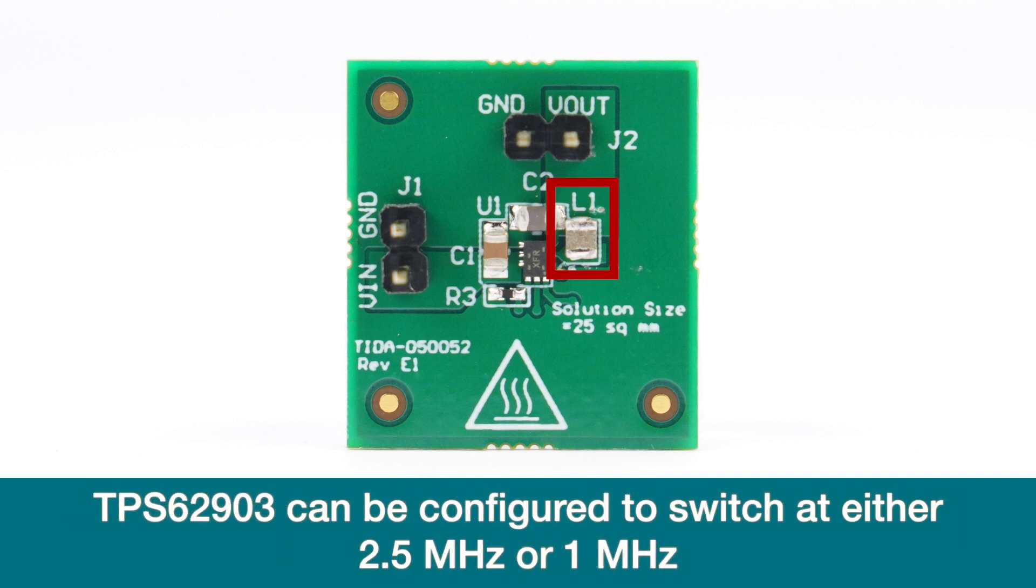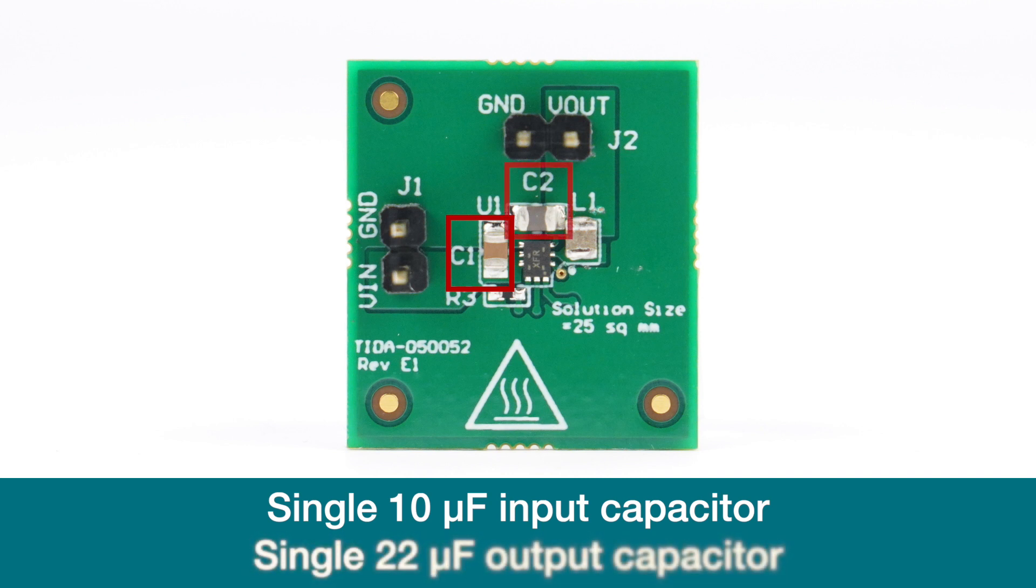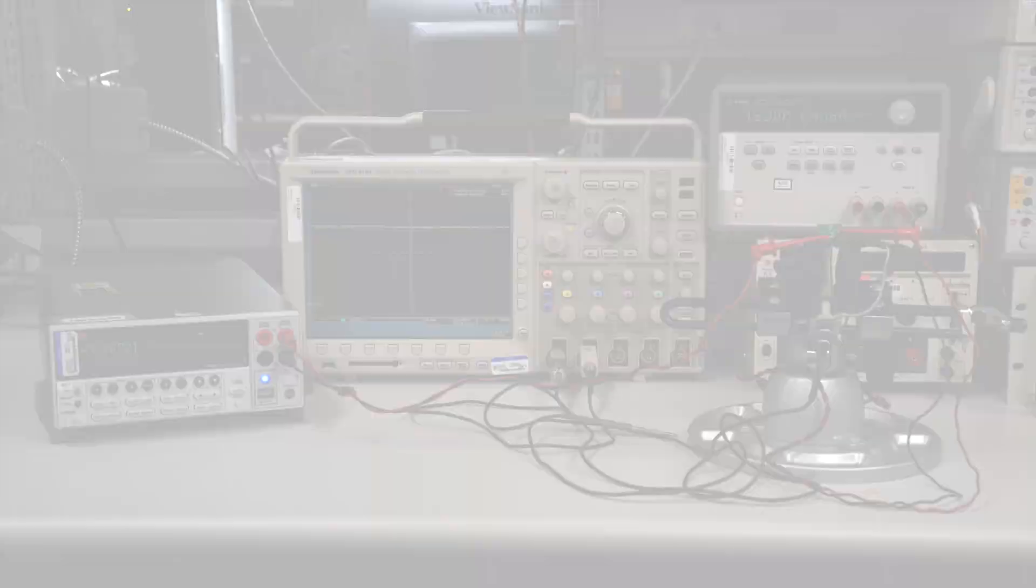Next, the TPS62903 can be configured to switch at either 2.5 MHz or 1 MHz. This allows the user to customize the inductor size to fit the needs of the application. And finally, only a single 10 μF input capacitor and a single 22 μF output capacitor are required.